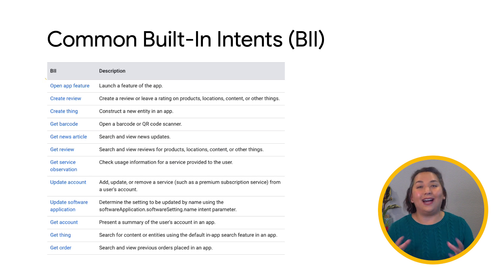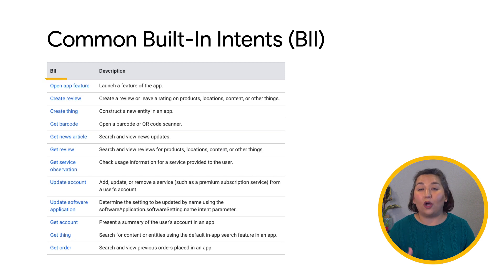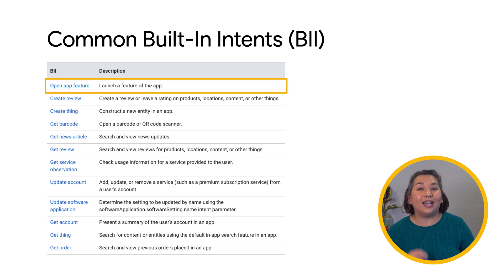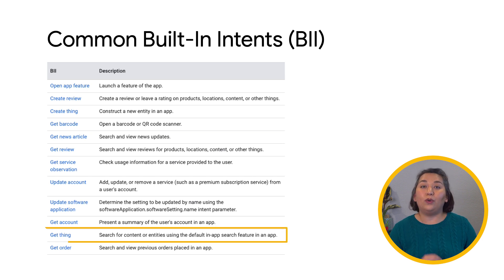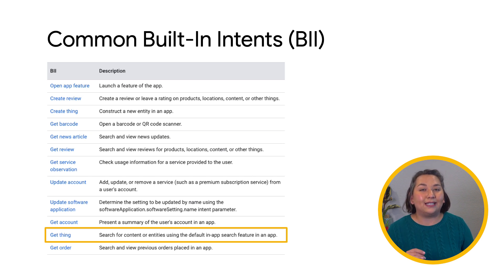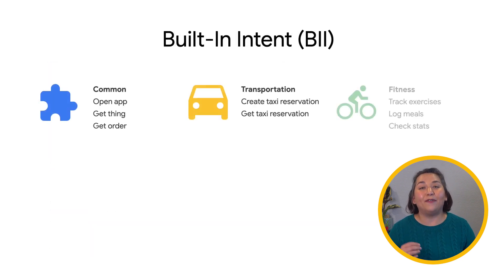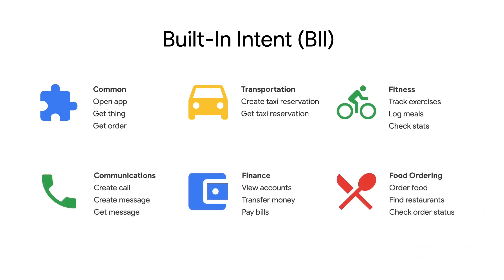With this example, the capability used a BII. App Actions supports tons of BIIs, and there's a whole category of common BIIs the majority of Android apps can use, like Open App Feature, which allows users to launch an app's feature, or Get Thing, which searches for a specific thing using the default in-app search feature. Make sure to check this list out first when considering using BIIs. We also have many more BIIs organized into several categories, like Order and Food, Communication, and Fitness. Check out the docs for the full list of BIIs.